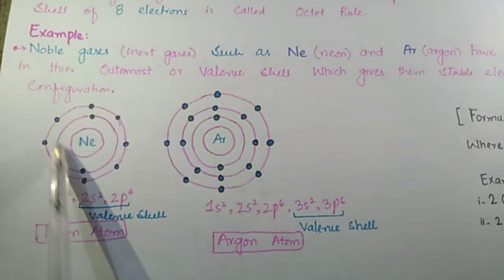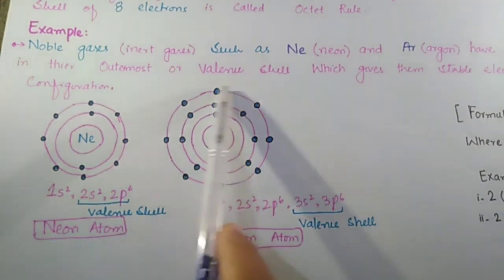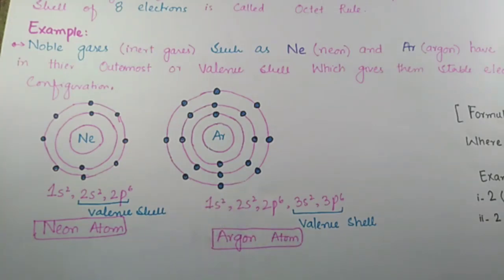This means that its octet is complete, the outermost shell is complete. It does not need any more electrons because its outermost shell is complete. When we write its electronic configuration, it is 1s² 2s² 2p⁶, a stable electronic configuration. Similarly, argon has atomic number 18, which means two electrons in the innermost shell, eight electrons in the second shell, and eight electrons in the outermost shell. Again, its octet is complete and it does not need any electron. So they are less reactive, they are very stable.